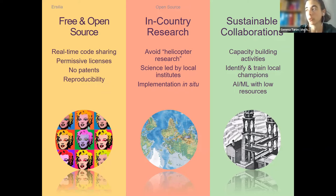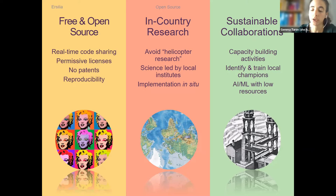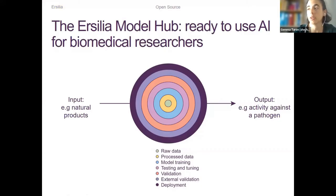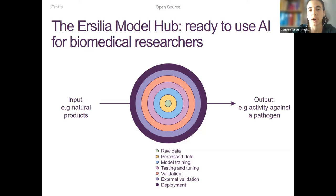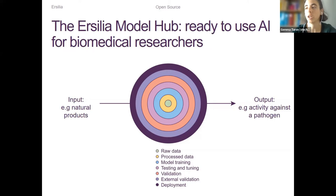We leave scientific leadership to the local research institutes and always support implementation in situ — in person if we can — establishing sustainable collaborations and training local scientists in how to use these new tools, how to deploy them in their institutions, and in follow-up projects that may come from collaborating with us. Our main asset is the Ercilia model hub, designed to produce ready-to-use artificial intelligence models for biomedical researchers — and when I say biomedical researchers, keep in mind we are talking about people like I was a few years ago: I never typed a single line of code.